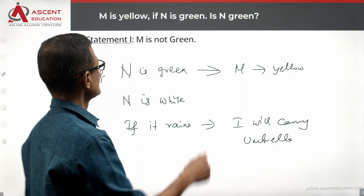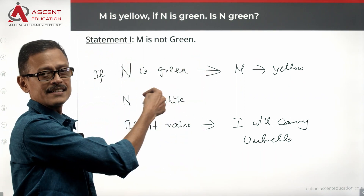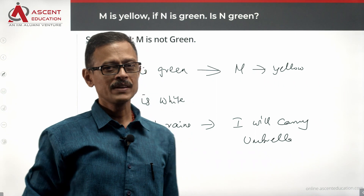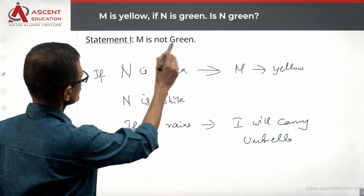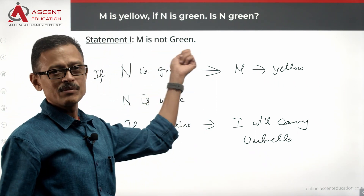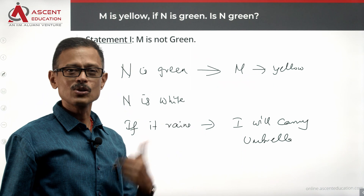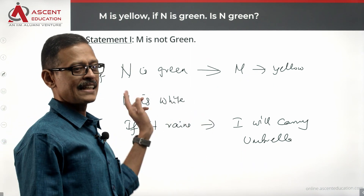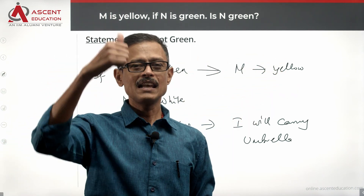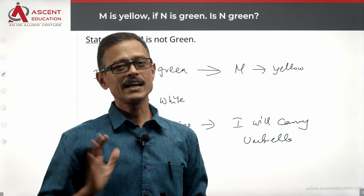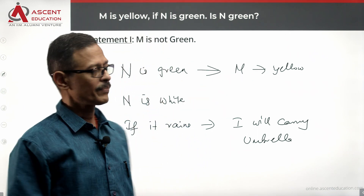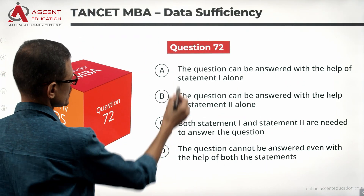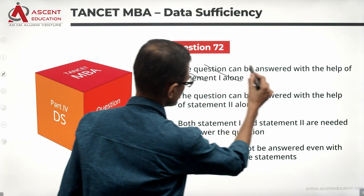If M is yellow, we cannot definitively say N is green, because M can be yellow even when N is not green. Statement 1 says M is not green, but M could still be yellow or some other color. Therefore, statement one alone is not sufficient. Let's rule out answer option A.